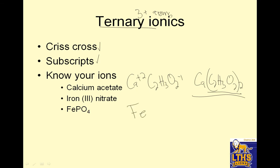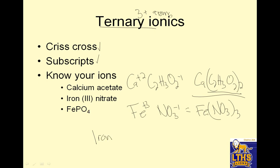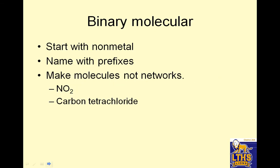Iron 3 nitrate: Iron 3 means iron is plus 3 — it's a Roman numeral. Nitrate, which I had to memorize, is NO₃ negative. So I have Fe, crisscrossed, with NO₃ taken thrice. To go backwards: if I have iron phosphate, I don't know the charge on iron because it's a Roman metal. Phosphate, because I memorized it, is minus 3. So that minus 3 for phosphate must cancel with 1 iron, so it must be iron 3 phosphate. Those ions are given to you the first day of school.